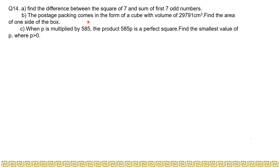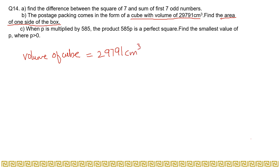Coming to part B: a postage packing comes in the form of a cube with a volume of 29,791 cubic centimeters. Find the area of one side of the box. What you need is the area of one side of the box, and what you are given is the volume of the cube. Volume of cube equals 29,791 cm³. The box is basically a cube, and we need the area.